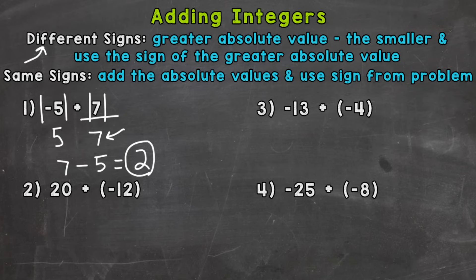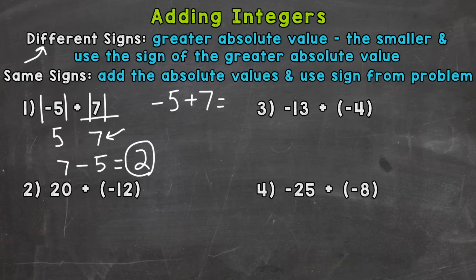The other strategy we can use is our overall number sense and knowledge of integers to solve this using mental math. We have negative five plus seven. We're starting at negative five and we're adding a positive seven, so we are increasing in value. Negative five plus a positive five gets us to zero, but we have seven, which is two more than that positive five. So we go two more than zero and we land on positive two. I also have a video that goes through how to add integers using a number line, which helps visualize what's going on. I'll drop that link in the description.